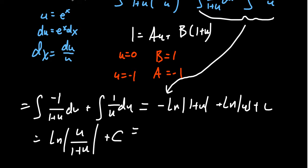And then remember that u is itself equal to e to the x. We get the natural log of the absolute value of e to the x over 1 plus e to the x plus an arbitrary constant. And so this is an acceptable way of writing the final answer right here.